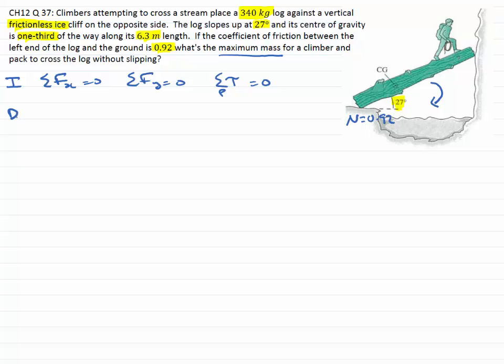The task is to draw a free body diagram with all forces acting where they should be. Here's the log with angle theta 1 between the log and ground, and the frictionless surface where mu equals zero. The log has length L, with the center of gravity one-third L from the end. The weight of the log M1g acts at the center of gravity, where M1 is 340 kilograms.